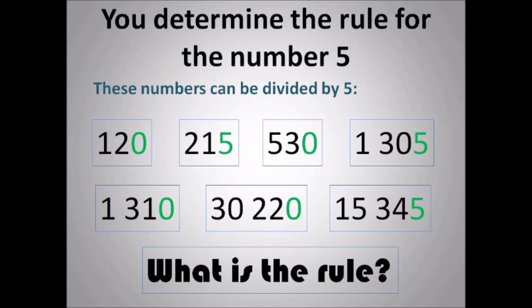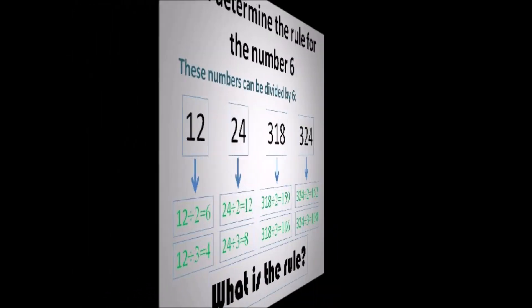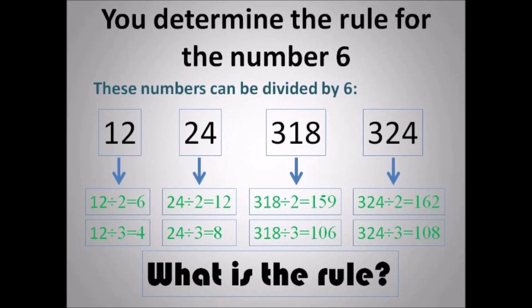You determine the rule for the number 5. These numbers can be divided by 5: 120, 215, 530, 1025, 1210, 30020, 15245. What is the rule? Why do I have those numbers highlighted in green? Once you know that, then you know the rule.